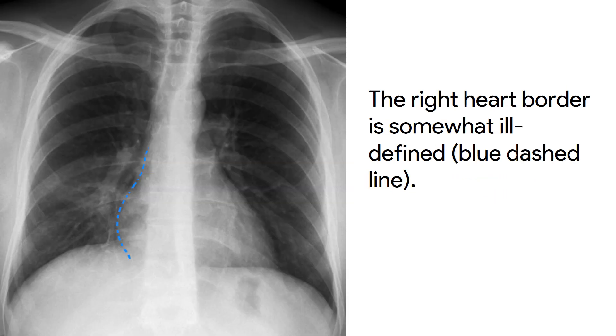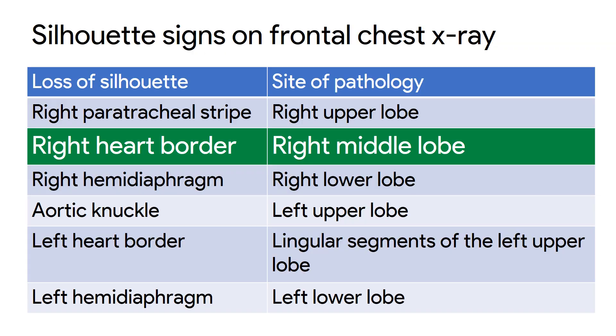The right heart border is somewhat ill-defined, shown by the blue dashed line. The silhouette sign states that if the right heart border is obliterated, the pathology is in the right middle lobe.